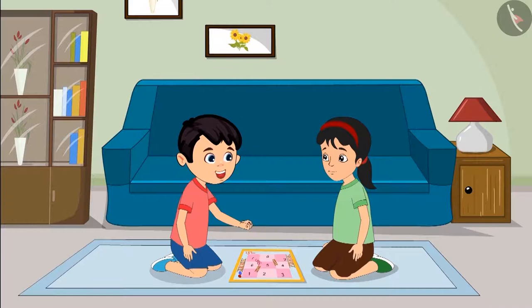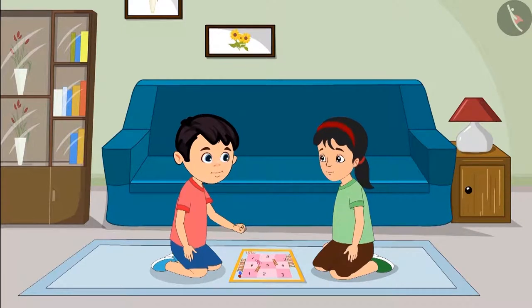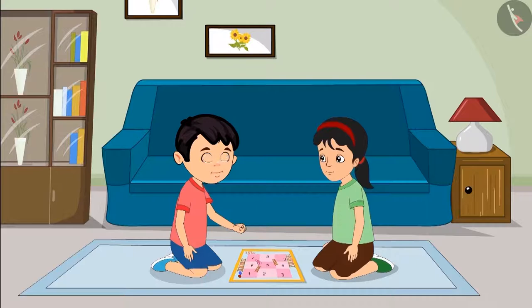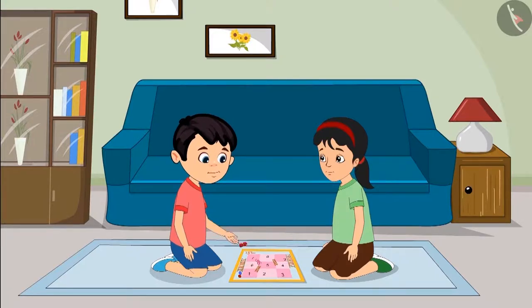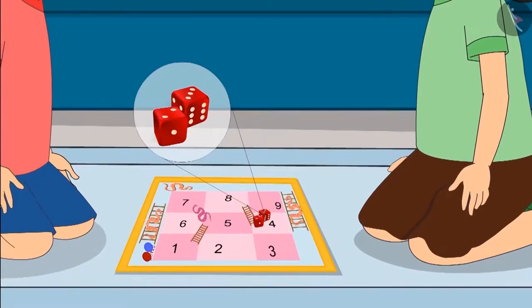May I roll the dice first? Yeah, sure. Then add the numbers on both the dice correctly and move your piece forward. Okay. Chotu rolls both the dice. Just see, 2 is written on one dice and 3 on the other.